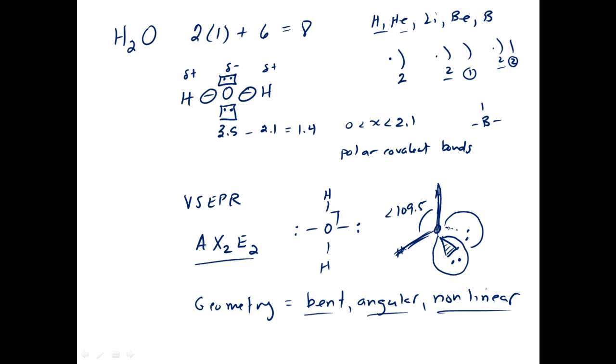Alright, next thing you need to be able to do is put the partial negative here, put the partial positives on the hydrogens. Again, what's happening here is the electrons are being pulled towards the oxygen because it's more electronegative. Now, there is a way to draw an imaginary line right through here, strictly positive on this side, here and here, and strictly negative on the other side. Because the molecule itself has a positive and negative end to it, we call this a polar molecule.